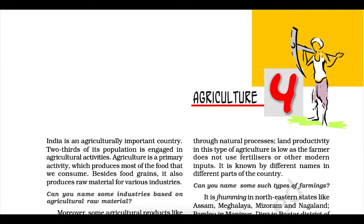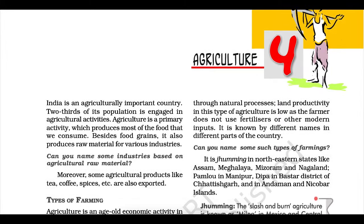India is an agriculturally important country. Two-thirds of its population is engaged in agricultural activities. Agriculture is a primary activity which produces most of the food that we consume. Besides food grains, it also produces raw materials for various industries. Moreover, some agricultural products like tea, coffee, spices, etc. are also exported.